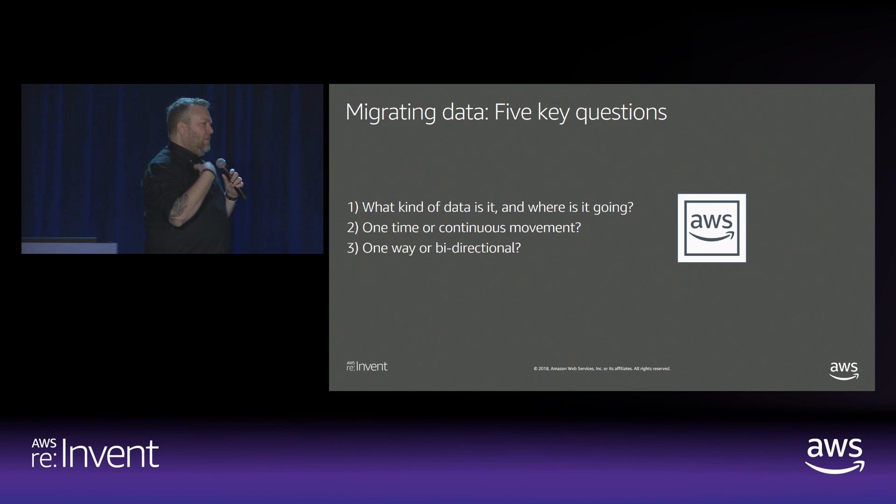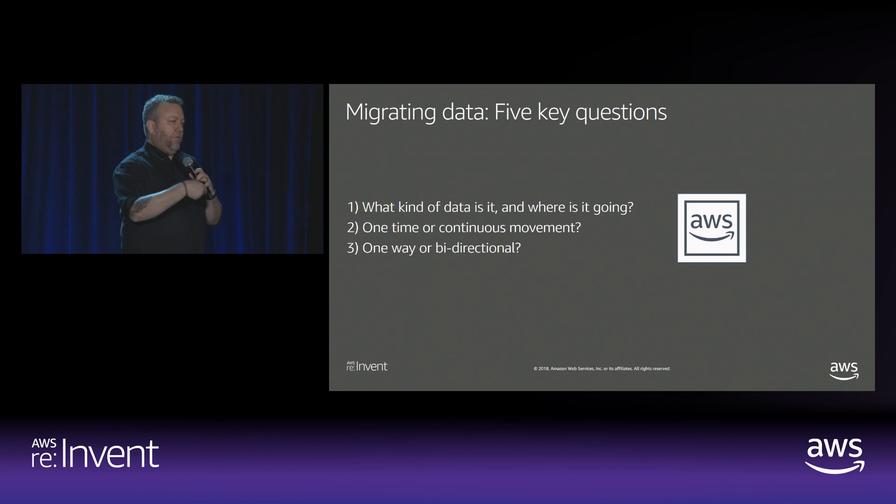Second consideration: one-way or bi-directional? Are you only coming into AWS, or are you putting data in and taking it back out? Are you familiar with Snowball? Did you know you can actually take data out of AWS with Snowball? You can place a Snowball order and we will fill it with data from a bucket and send it back to you. So you need to understand whether it's just coming in, just going out, or moving both directions.